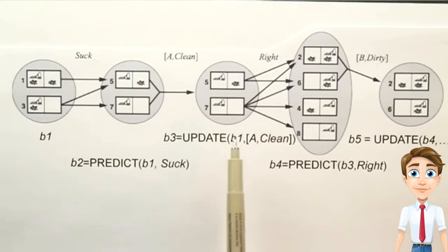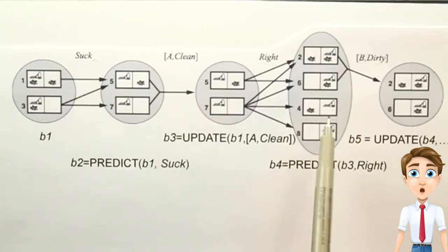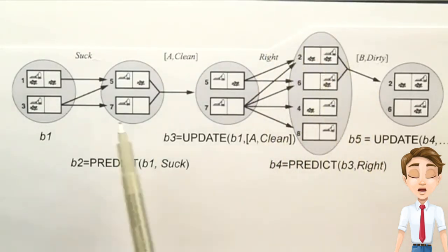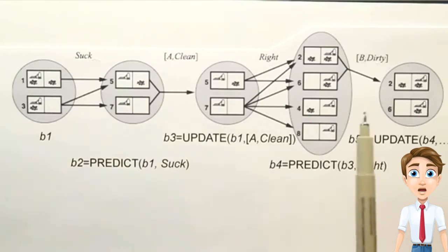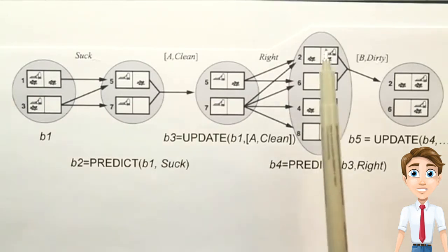Now, this predict-update cycle gives us a kind of calculus of belief states that can tell us really everything we need to know. But there is one weakness with this approach, is that as you can see here, some of the belief states start to get large. And this is a tiny little world. Already we have a belief state with four world states in it. We could have one with 8, 16, 10, 24, or whatever.